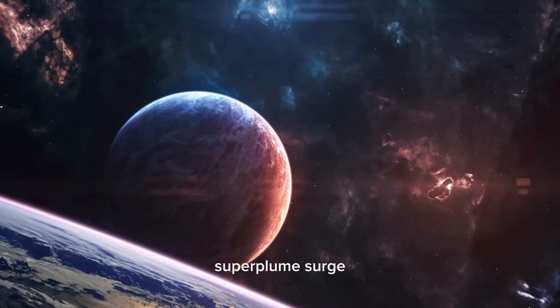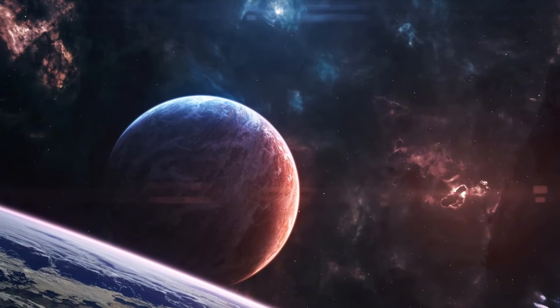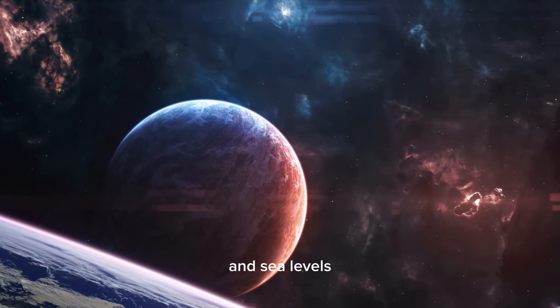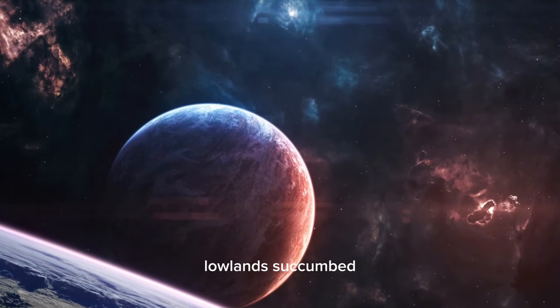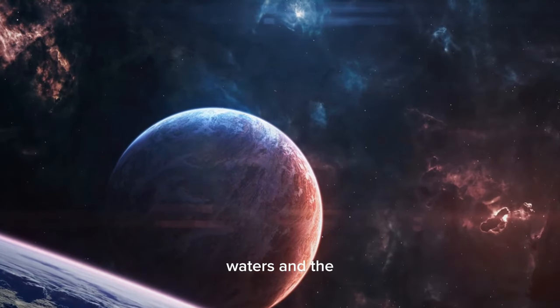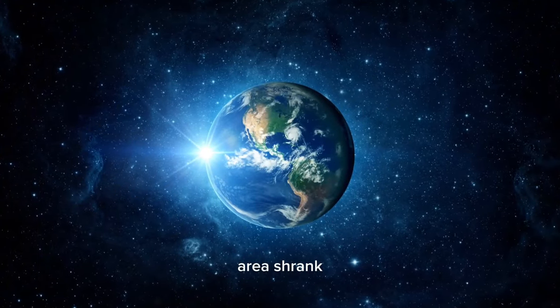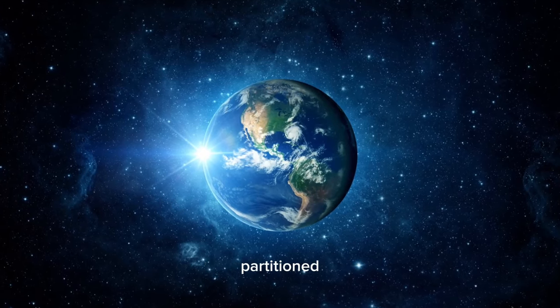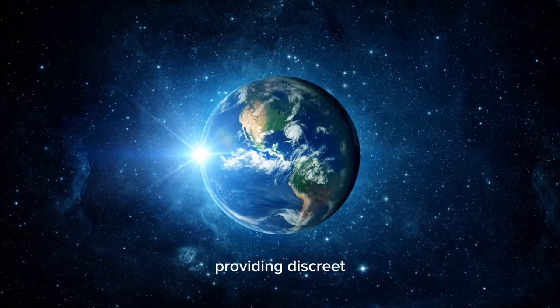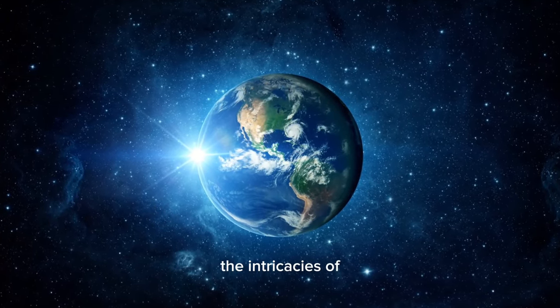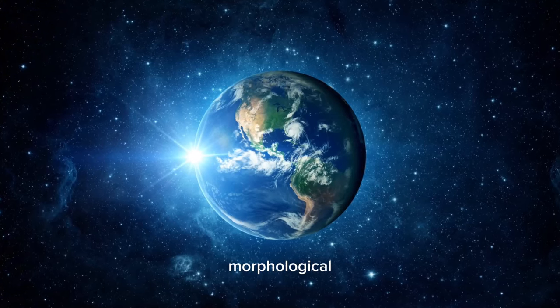A colossal Pacific superplume surged, elevating the Pacific Plate and sea levels. Lowlands succumbed to the rising waters, and the overall land area shrank. Ascendant sea levels partitioned the continents, providing discrete niches for the intricacies of individualized morphological evolution.